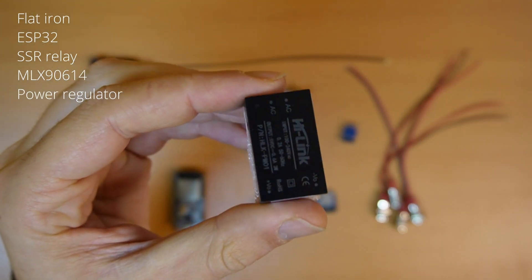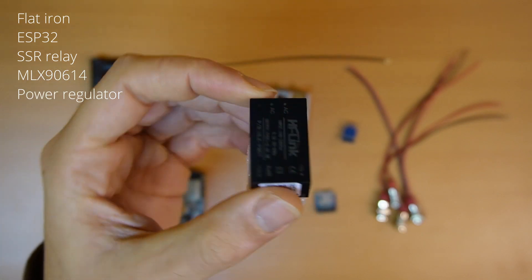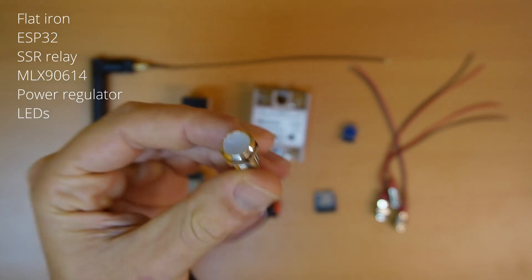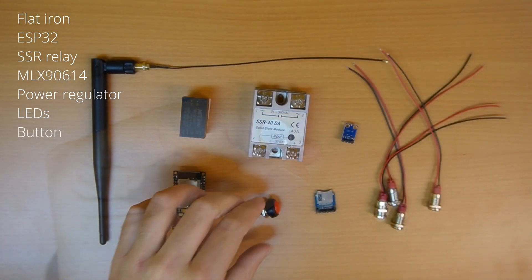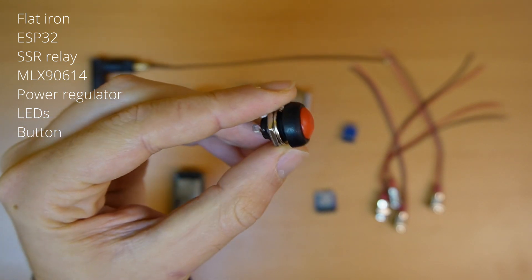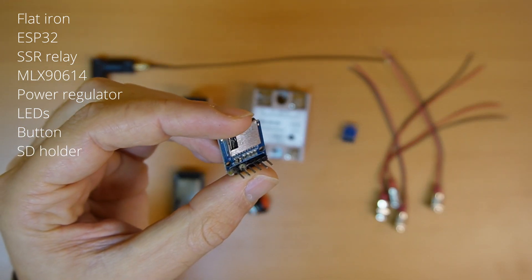A power regulator to power the DC circuit, basically the microcontroller from the AC power source, some panel mounting LEDs for state indication, a push button in case that we want to use the hotplate without the need of a PC, a SD holder to store reflow curves.